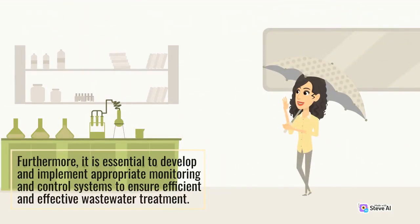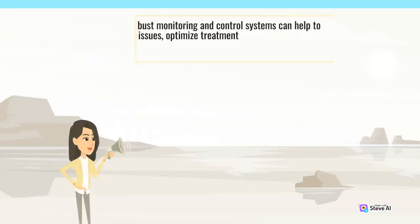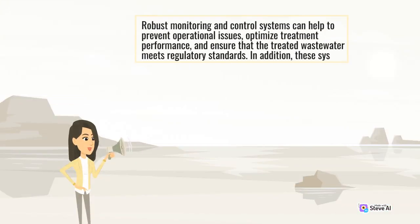Furthermore, it is essential to develop and implement appropriate monitoring and control systems to ensure efficient and effective wastewater treatment. Robust monitoring and control systems can help to prevent operational issues, optimize treatment performance, and ensure that the treated wastewater meets regulatory standards.